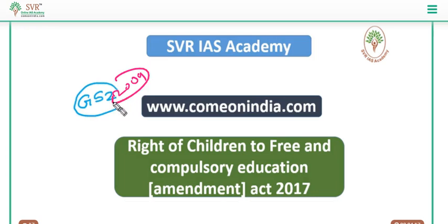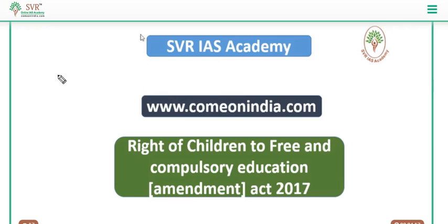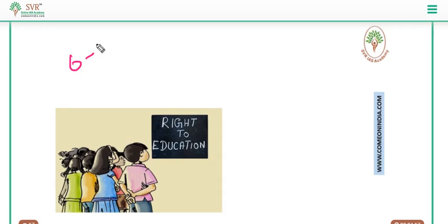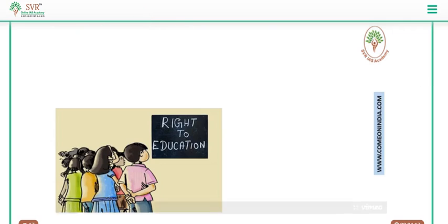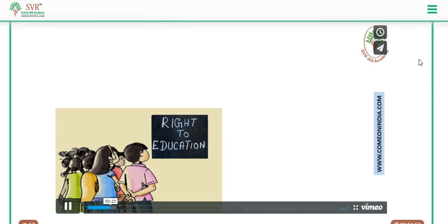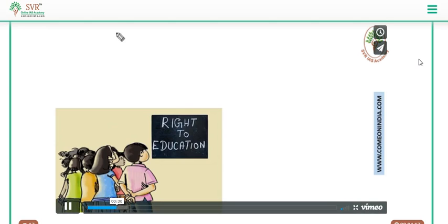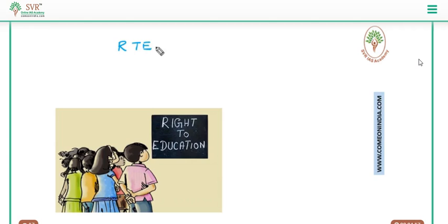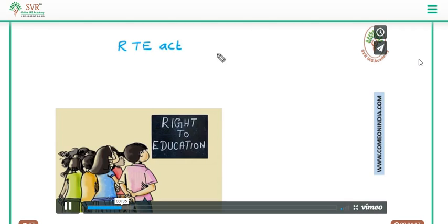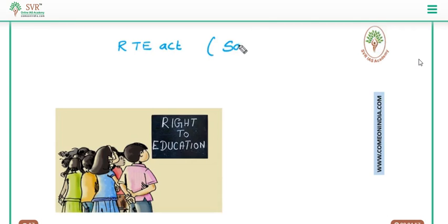In 2009 the act was passed which gives free and compulsory education to children aged between 6 to 14 years — one of the very important exam points. Because of compulsory education, many unqualified teachers entered the profession, so government gave 5 years for unqualified teachers to become qualified. Since lakhs of teachers still didn't qualify, the government extended the deadline by another 4 years.